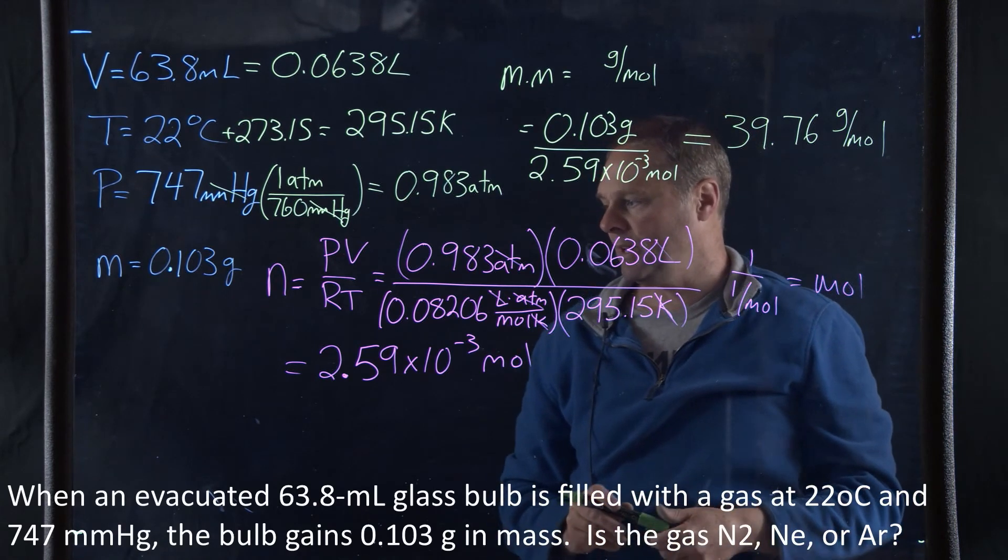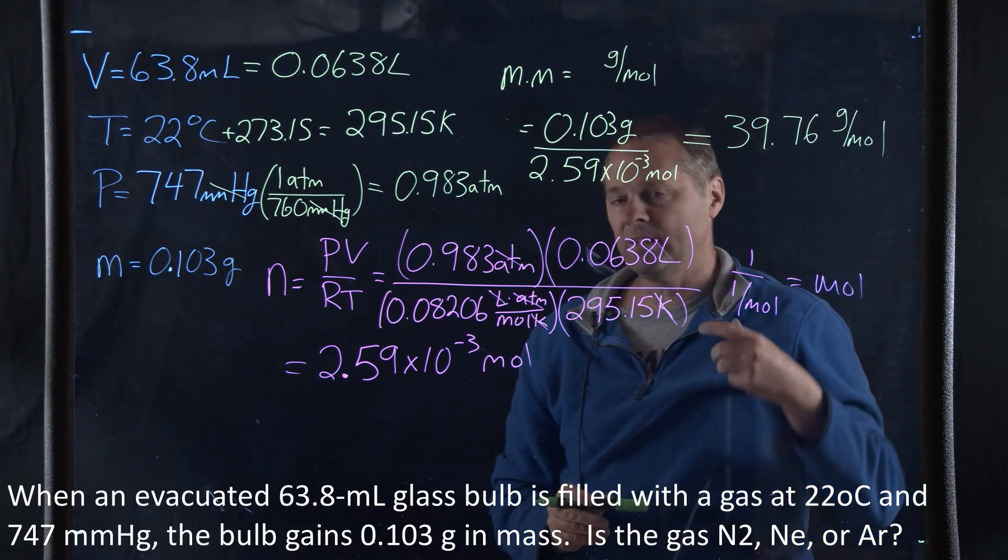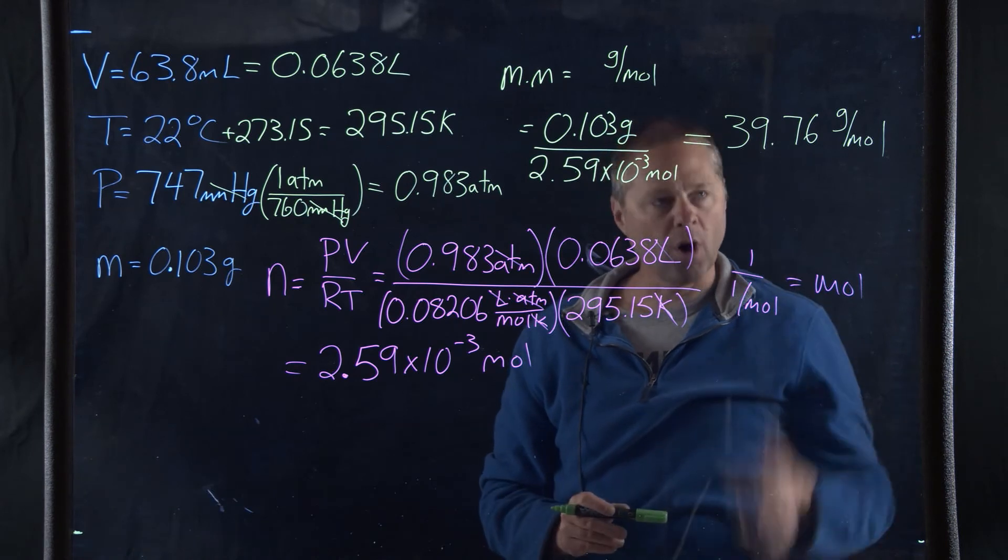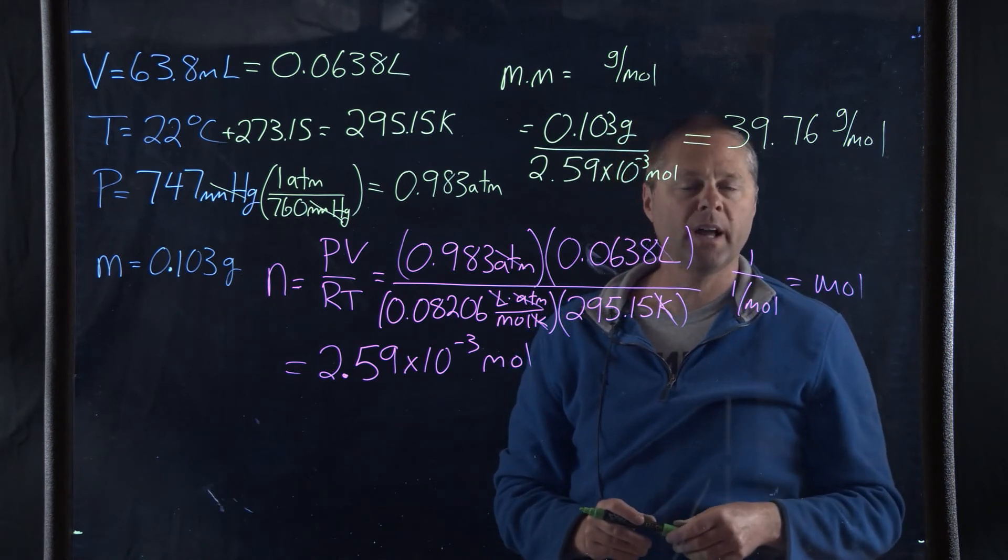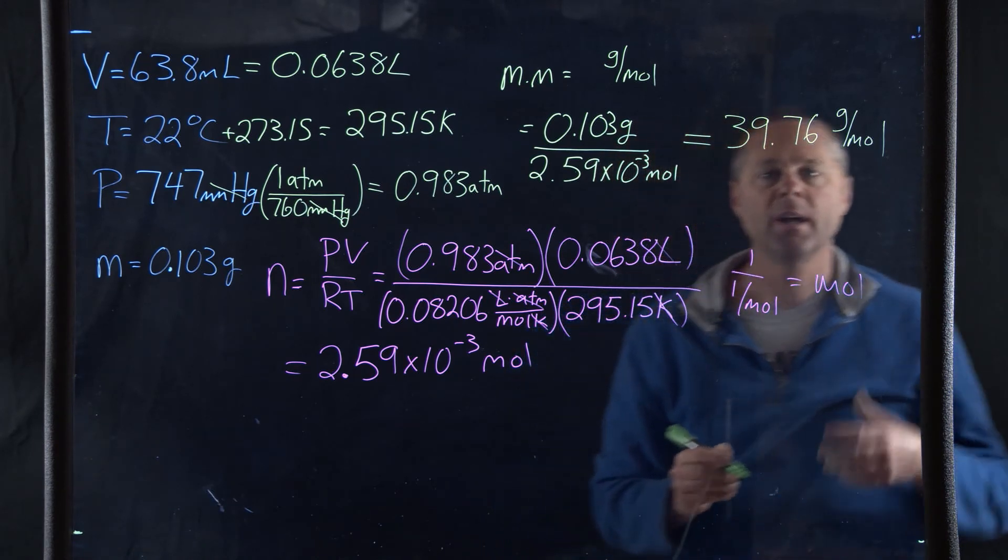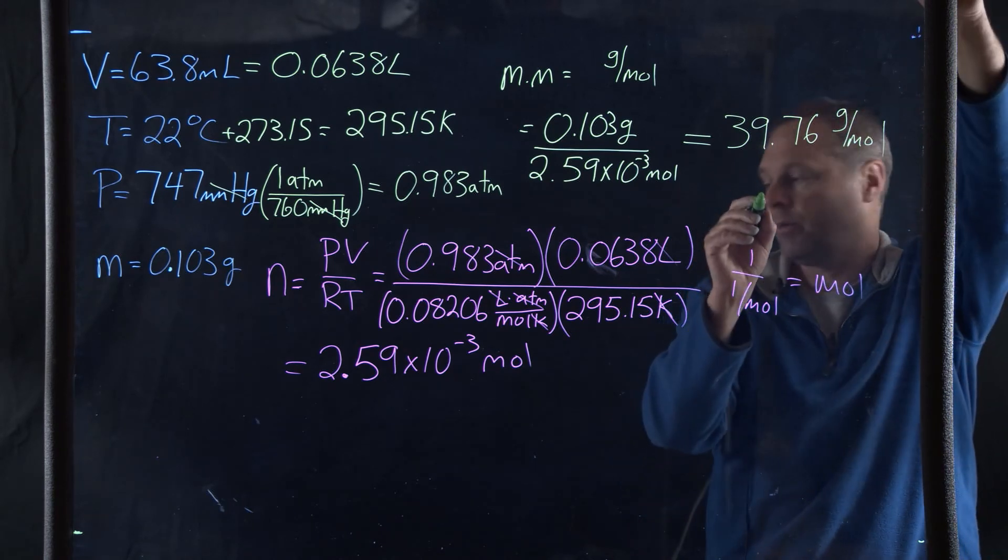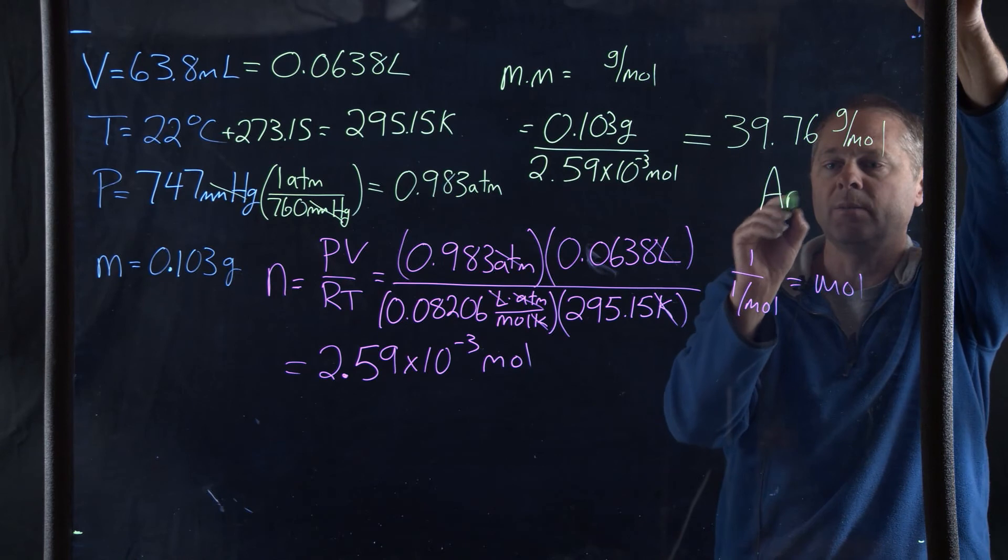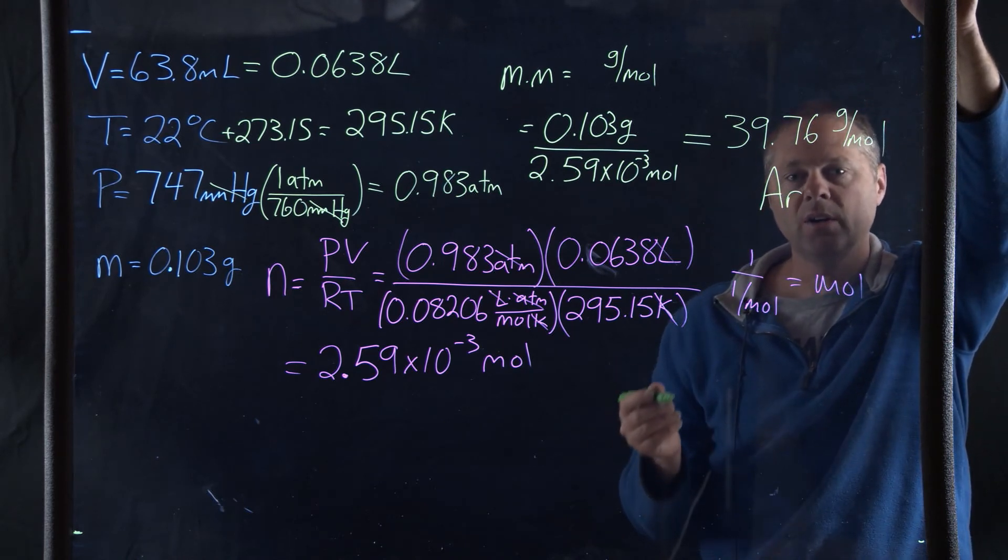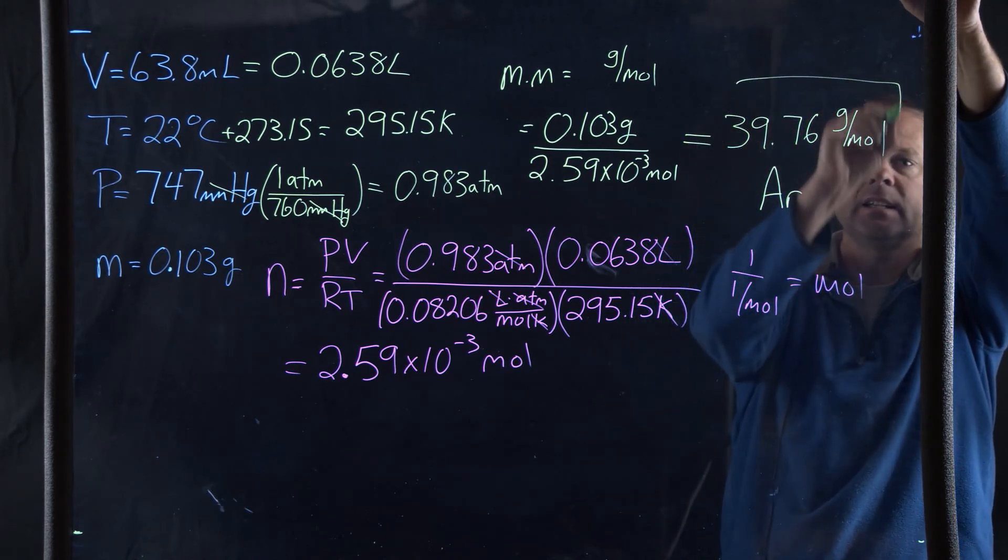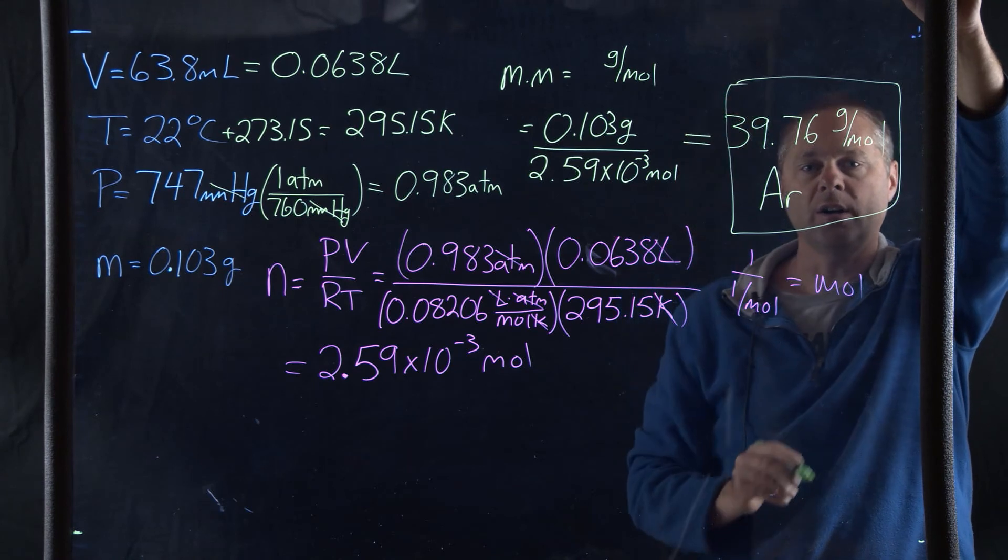Now, the options are nitrogen, neon, or argon. Well, if you look on the periodic table, you can determine that this happens to be the molar mass of argon. And so, our sample of gas is going to be argon.